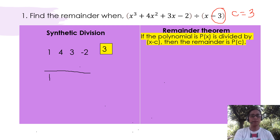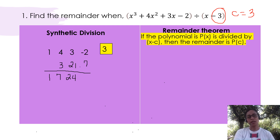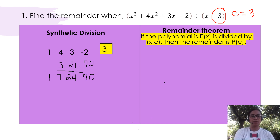We bring down 1. Then 1 times 3 is 3. 4 plus 3 is 7. Then 7 times 3 is 21. 21 plus 3 is 24. Then 24 times 3 is 72. Now, since the third row values contain the remainder, our remainder is actually the last digit, which is 70.